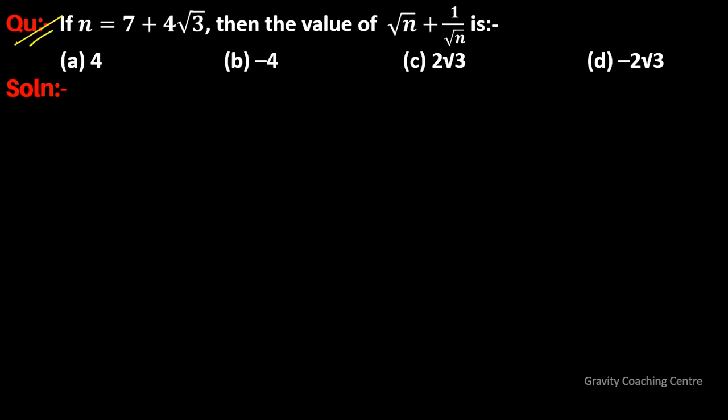The question: if n is equal to 7 plus 4 root 3, then find the value of root n plus 1 upon root n. Given that n is equal to 7 plus 4 root 3.